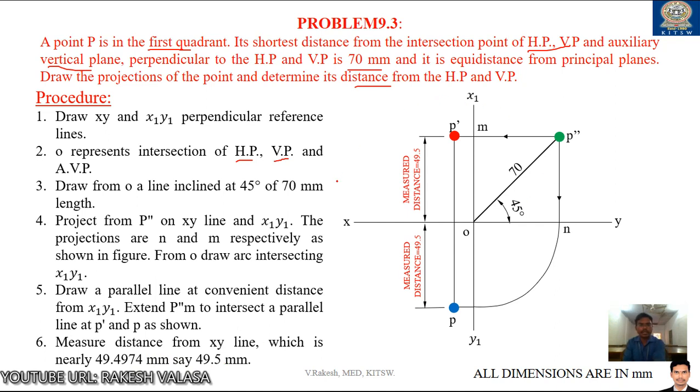After completion of this problem you need to write the statement for the given question. That is distance from the HP and VP is 49.5 mm. This is the solution for the given problem number 9.3 in engineering drawing by ND Bhatt textbook.